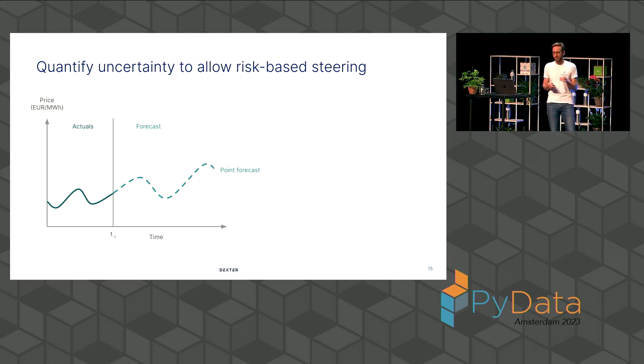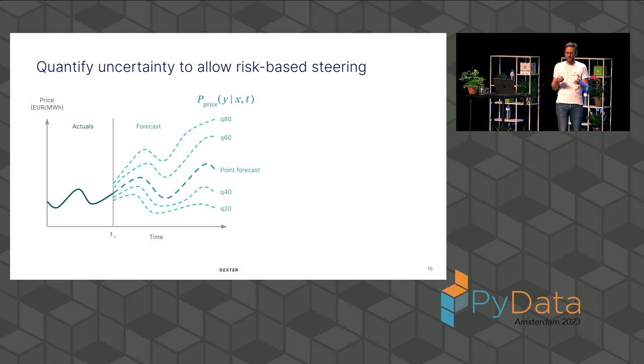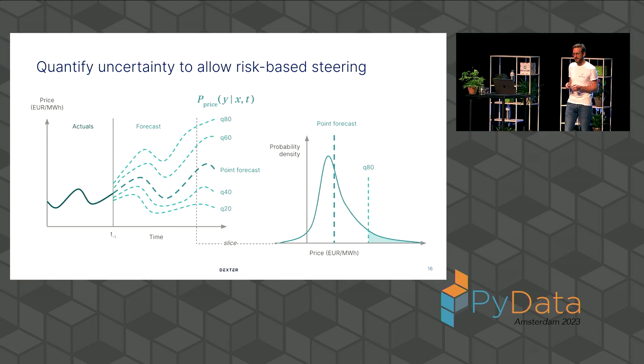Let me explain this. So here you see a point forecast. So basically a time series of the price, some actuals, and then at T minus one, we want to predict the next time series, the course of that. So a forecast. But we need to harness the uncertainty in the system, learn to embrace it. We forecast percentiles or quantiles. So basically many different prediction intervals for each time point in the future. And we get a probability distribution at each time point in the future.